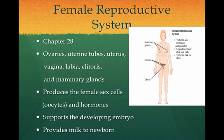The female reproductive system includes the ovaries, the uterine tubes, the uterus, the vagina, the labia, clitoris, and mammary glands. This system produces the female sex cells called oocytes and hormones. It supports the developing embryo from conception to delivery and provides milk to nourish the newborn. Both the male and female reproductive systems will be studied in Chapter 28.